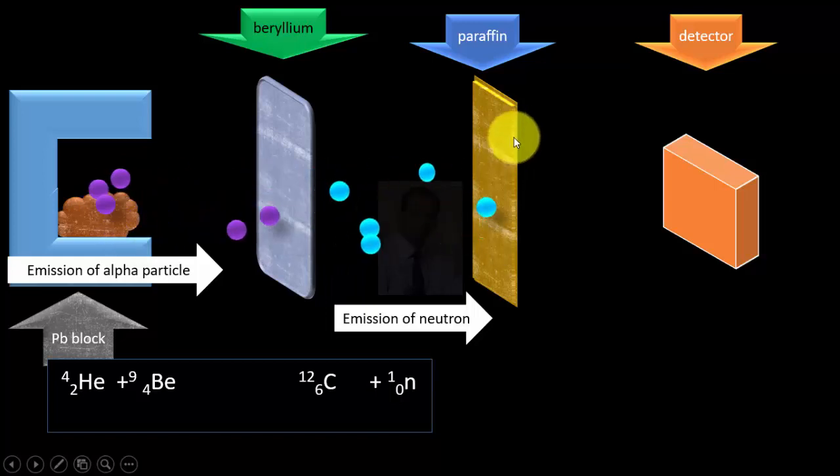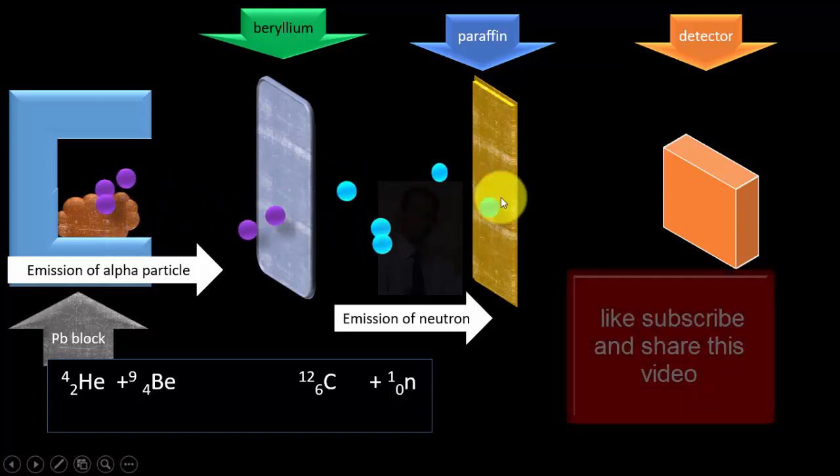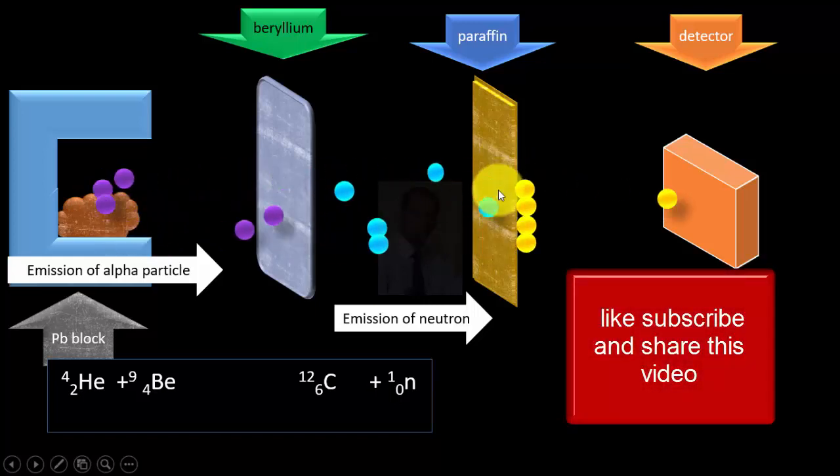And these neutrons went on to hit the paraffin material which is rich in protons. Since neutron and proton are of comparable mass, it was possible that this neutron could eject protons from paraffin material.